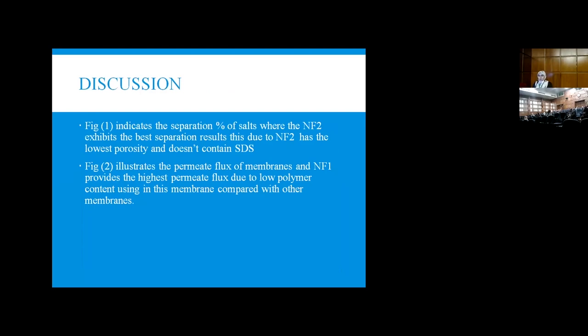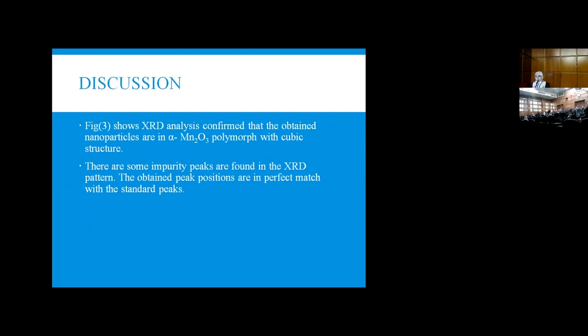From figure 1, we can conclude that the best separation is NF2, which doesn't contain SDS, and has the lowest percent of porosity. Figure 2 shows that NF1 is the best one from the point of permeate flux, which contains 1% of PVC. Figure 3 shows that NF2 contains magnesium oxide alpha phase and contains some impurities.